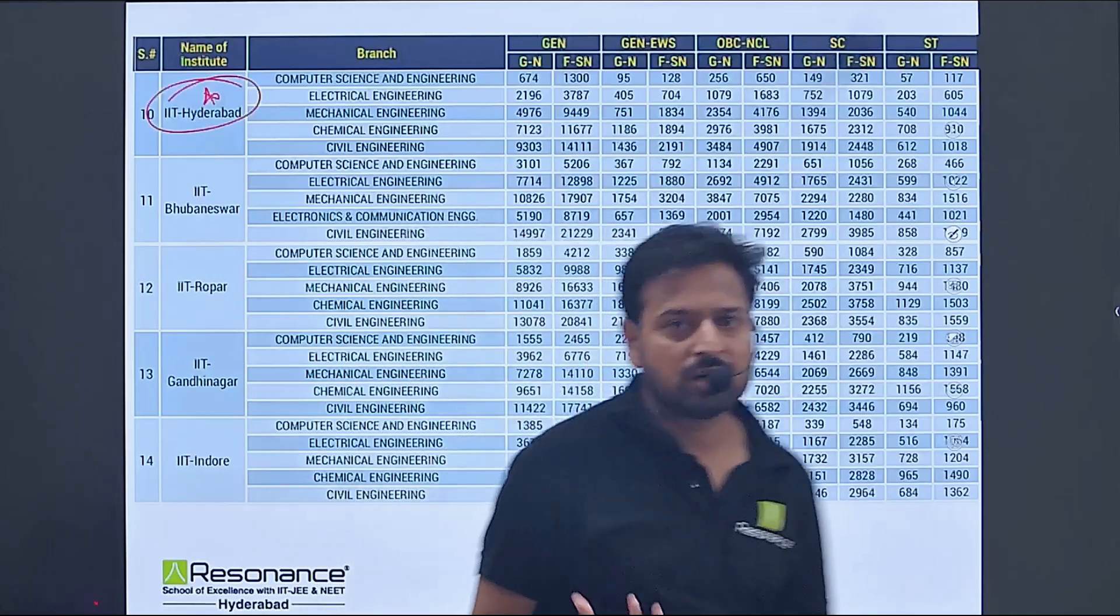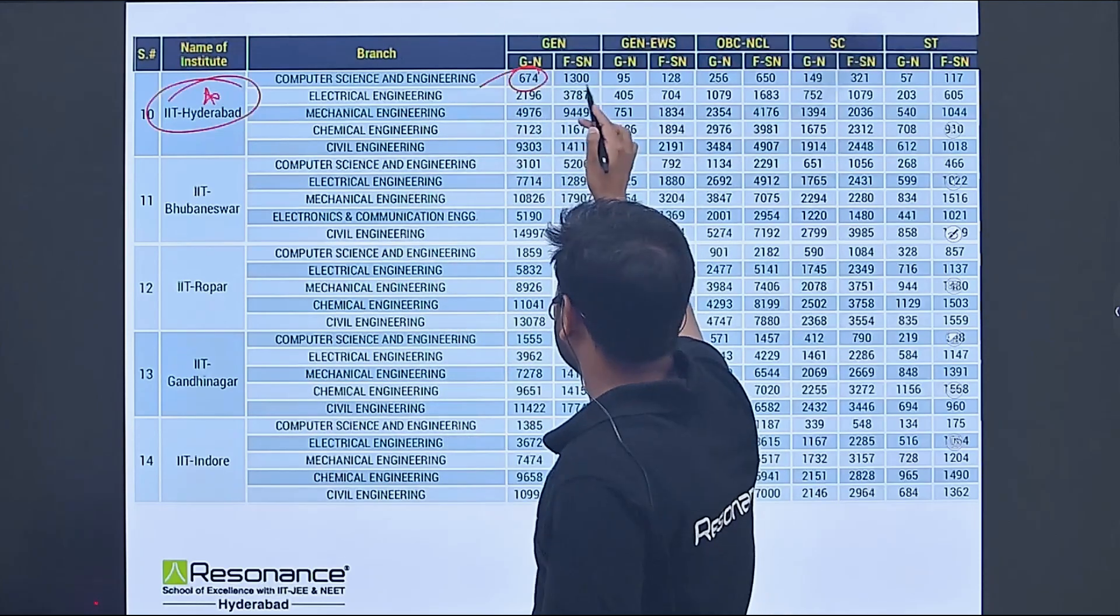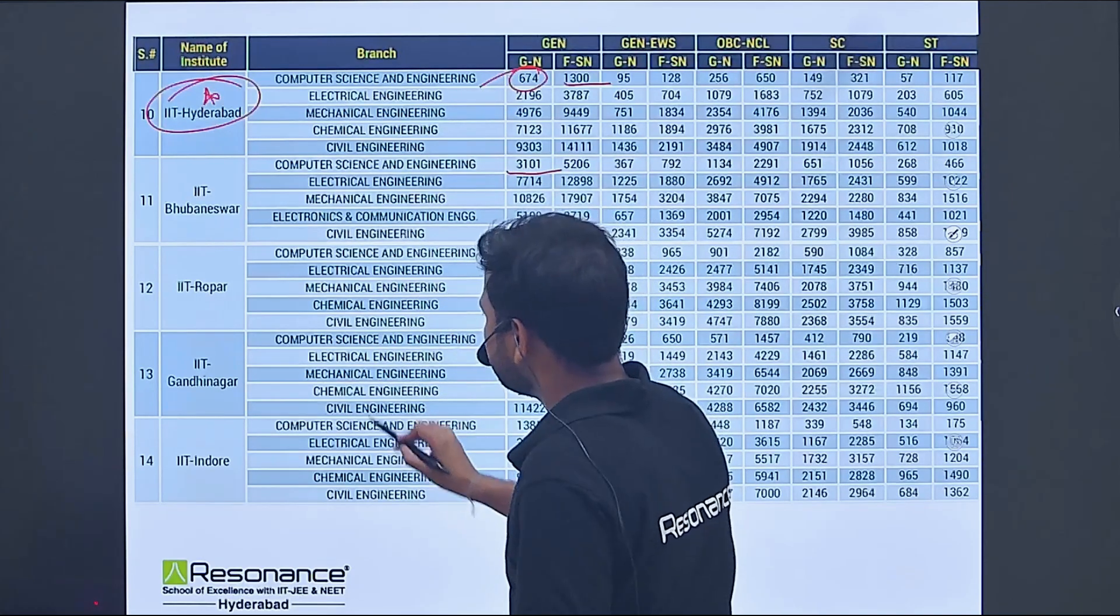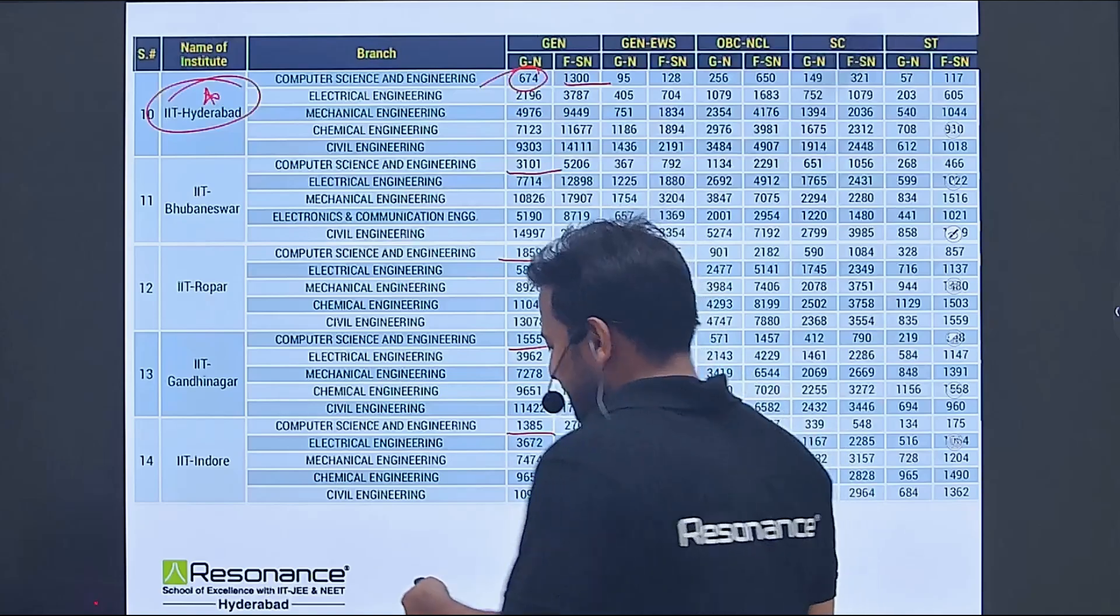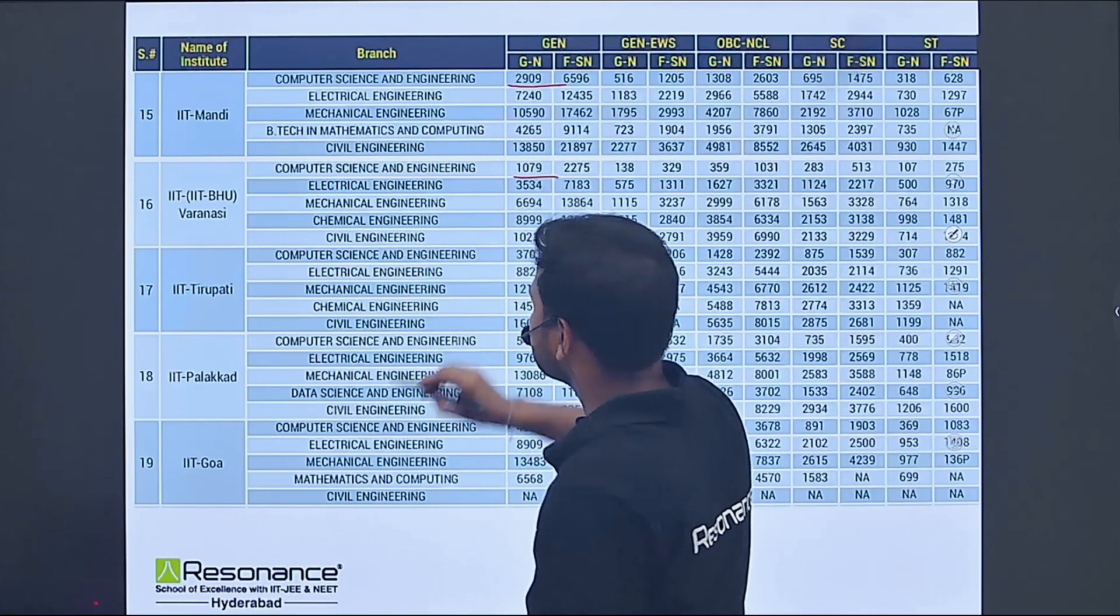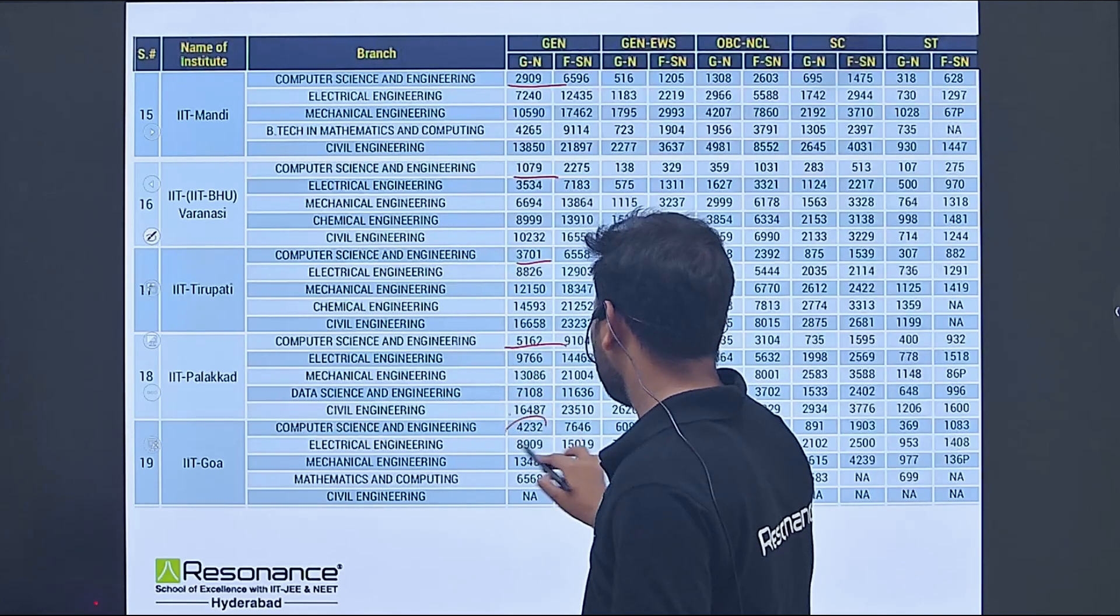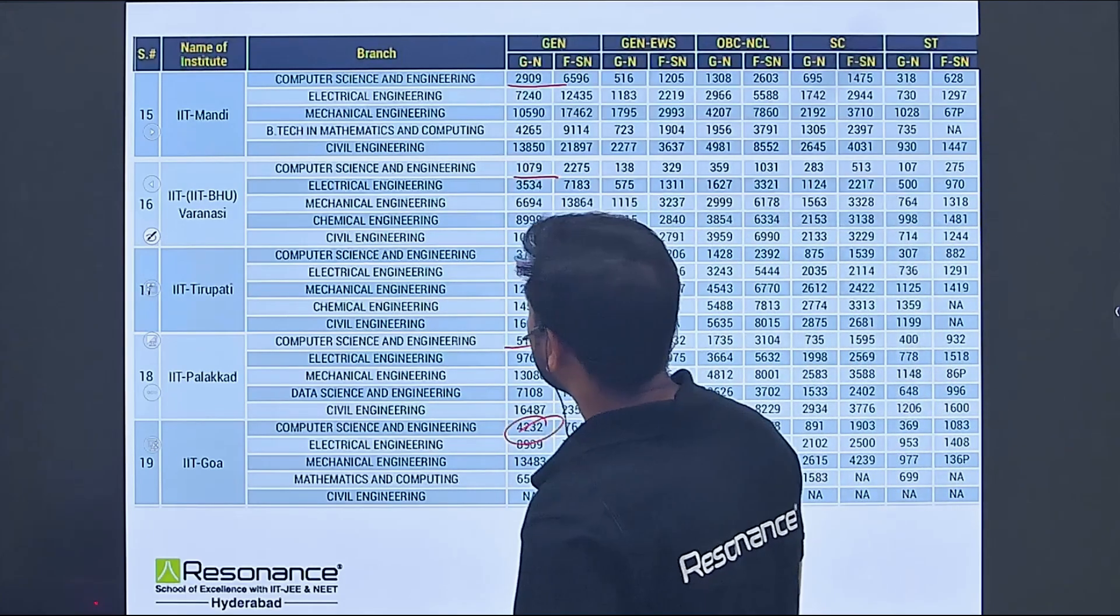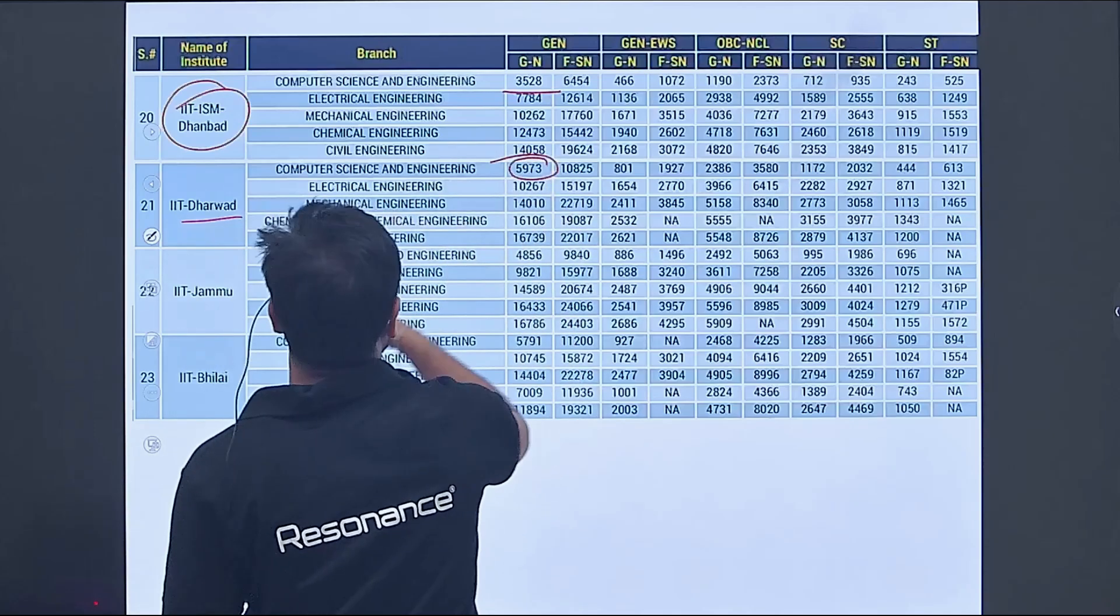IIT Jodhpur, CSE 2408, civil engineering 14476. IIT Hyderabad is also very special because of its location - most students try to go there because of placement. General closed at 674, female 1300. IIT Bhubaneswar 3101, IIT Ropar 1859, IIT Gandhinagar 1555, IIT Indore 1385. IIT Mandi CSE 2909, IIT Varanasi 1079, IIT Tirupati 3701, IIT Palakkad 5162, IIT Goa 4232. So if you have a rank till 5k, you can get into IITs.